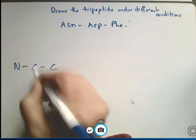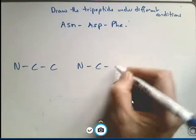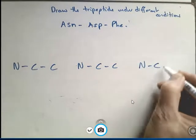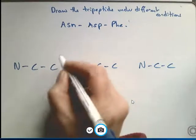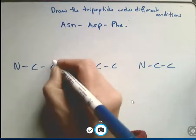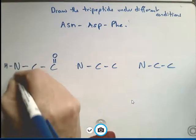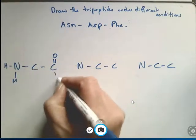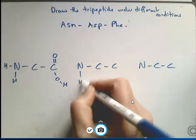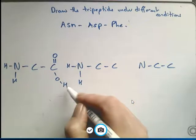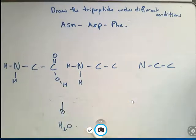It's always the amine, the middle carbon, and the carboxyl group carbon, then the next amine, the middle carbon, and the carboxyl carbon, and so on. The amine is NH2 and the carboxyl to make it the acid is COOH.